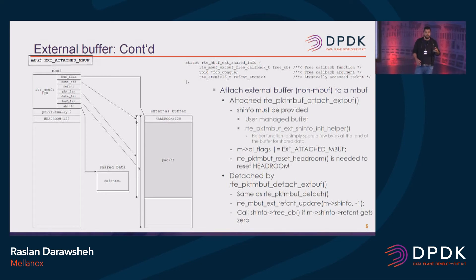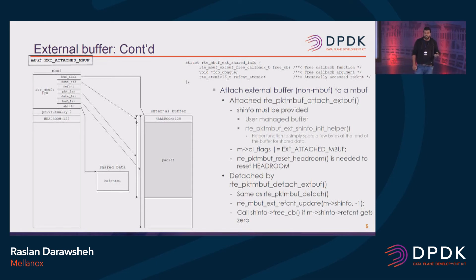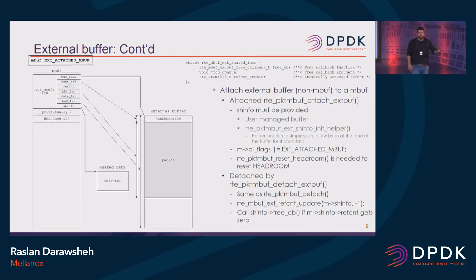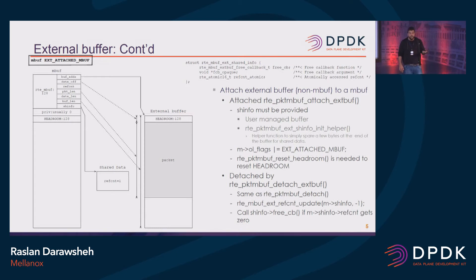Now let's assume we just attached it and we want to detach from an external Mbuf. What we do is call the packet Mbuf detach external buffer function — it's the same as the regular packet Mbuf detach. What it will do is update the reference count for this Mbuf by minus one. Once it reaches zero, it will call the callback function stored in the external shared info.